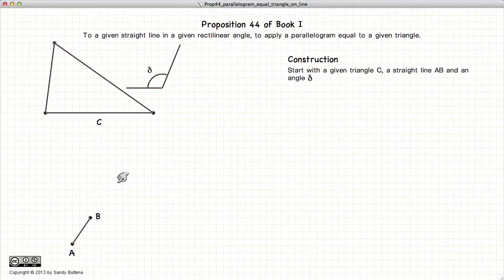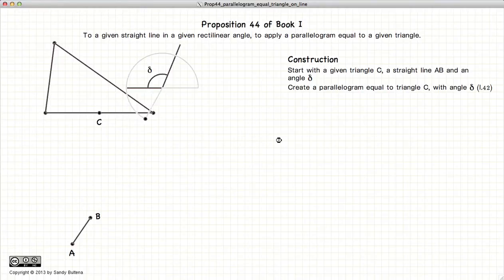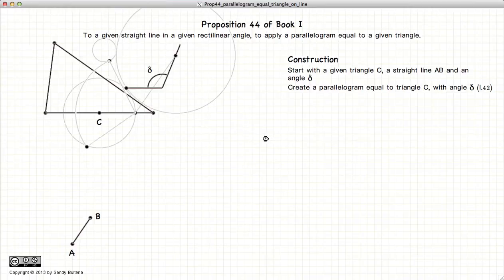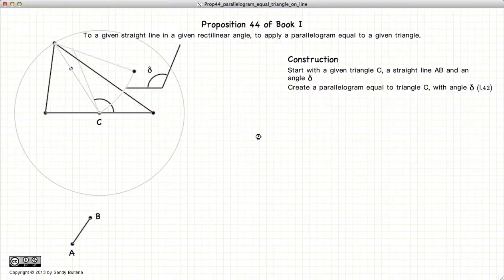Now the first thing we need to do is to construct a parallelogram equal in area to our triangle C. And we're doing this using the methods described in Proposition 42. Now it takes a little bit of time but we just have to have a bit of patience.